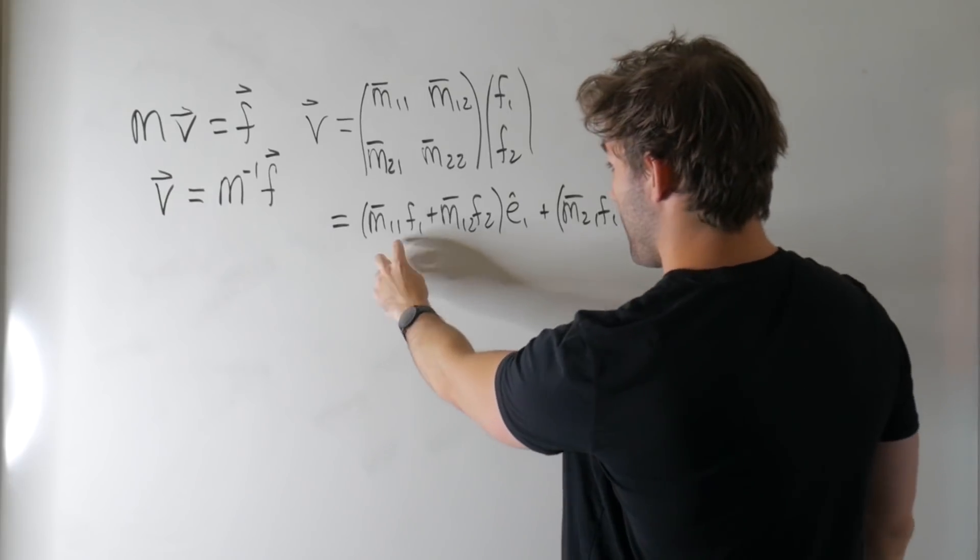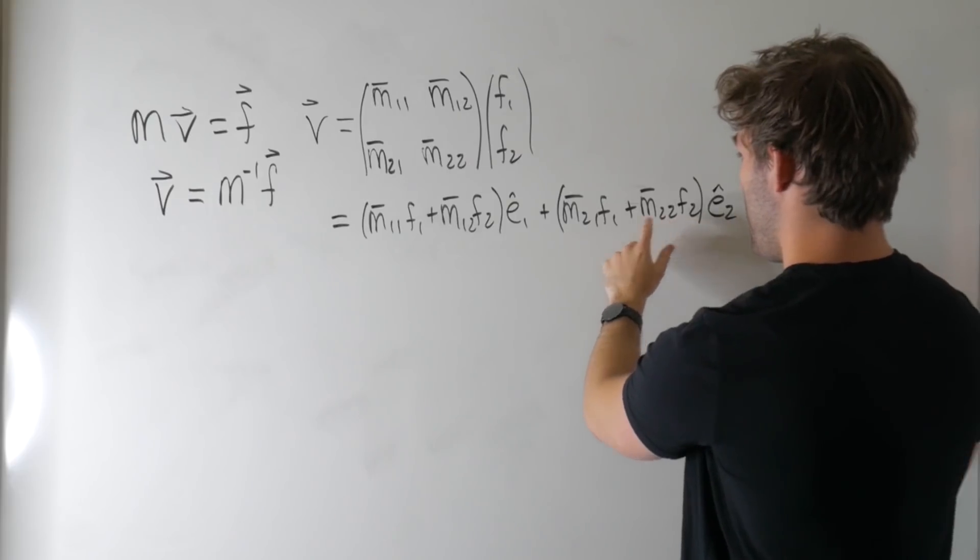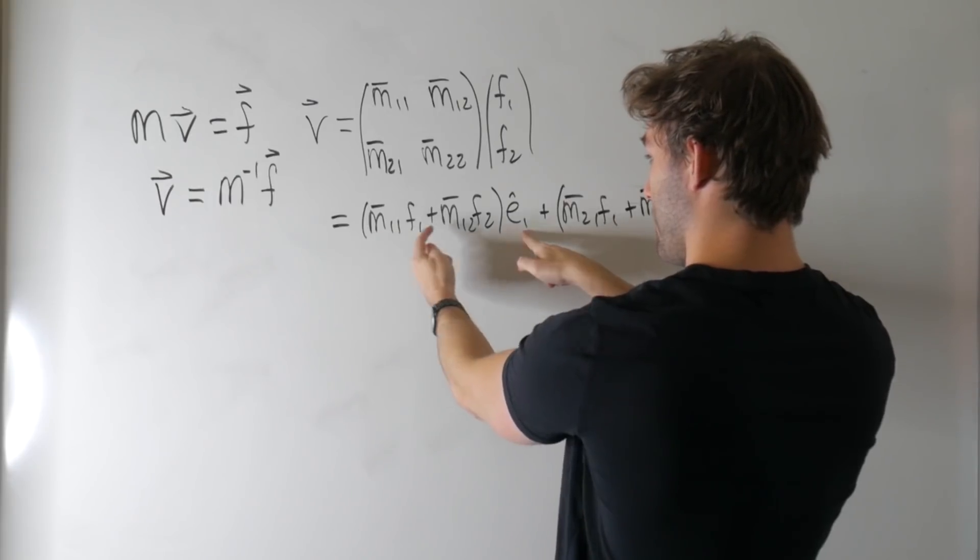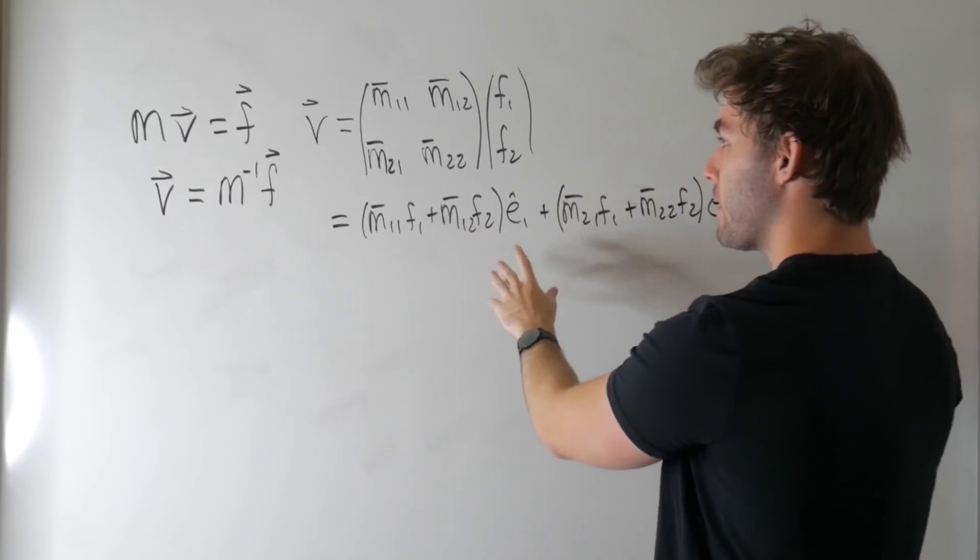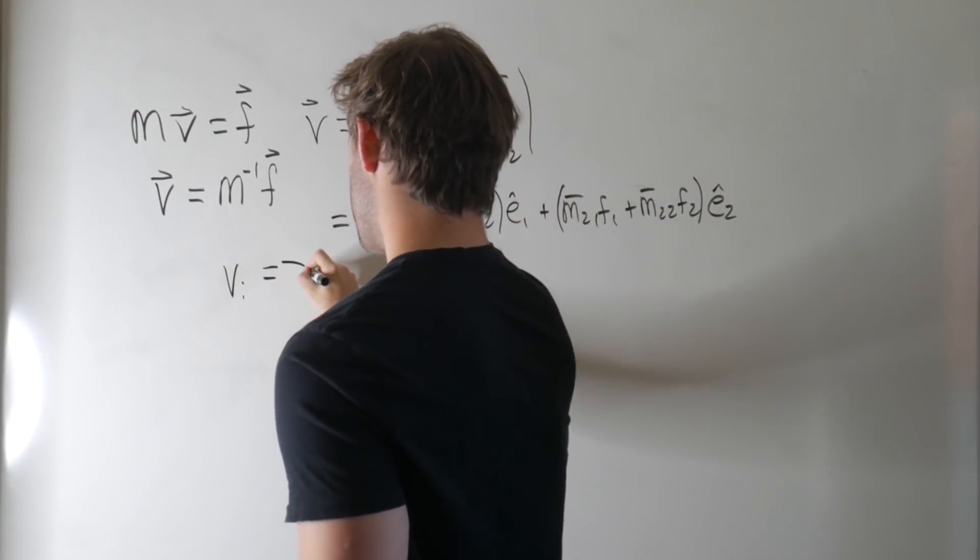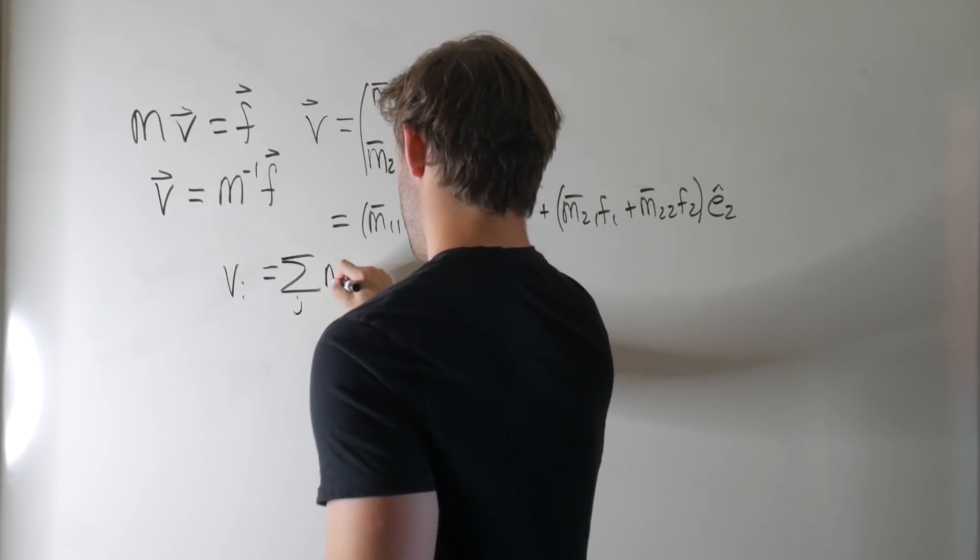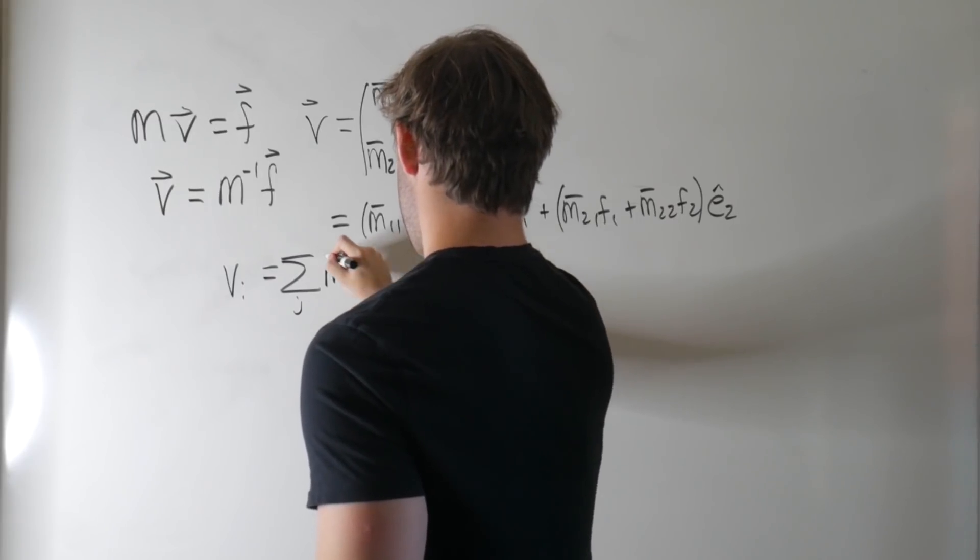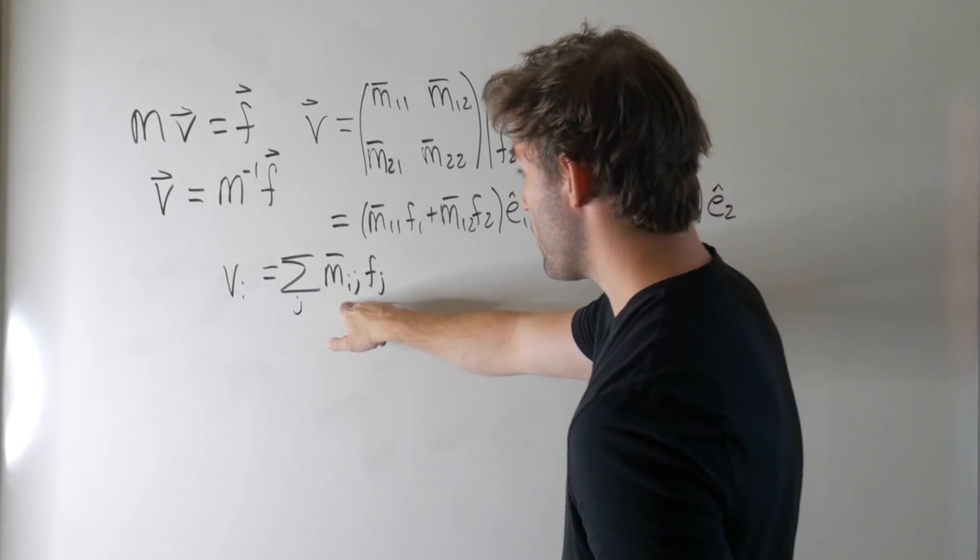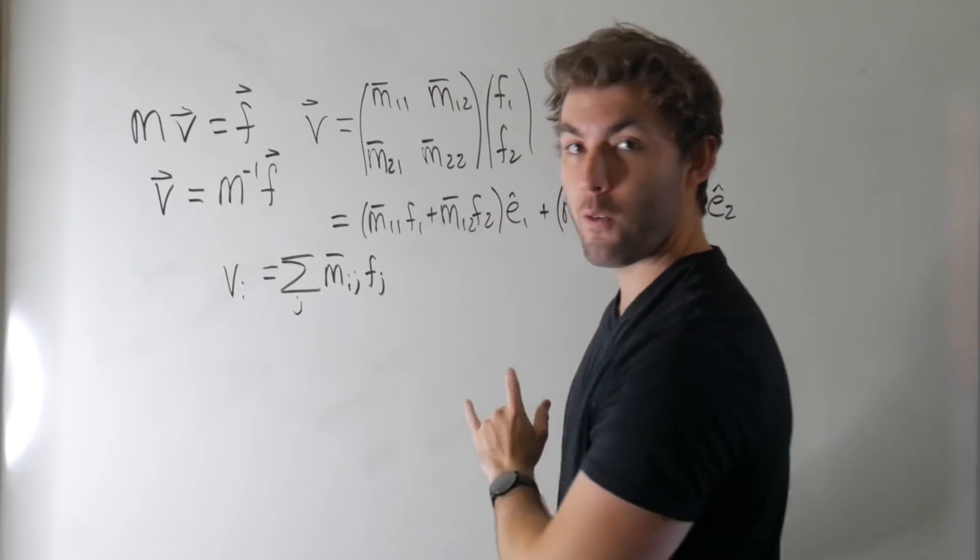And we see a pattern here, the second index is being summed over, 1, 2, and the component of the, so the X component for example, is going to match the first index. So we can simplify this a bit, we can talk about a component of this vector, where VI is just equal to a sum over some index, that second index, let's call it J, of M I J F J. So what I'm trying to say here is we're characterizing a matrix by two indices, we're characterizing a component of a vector by summing over the second index.